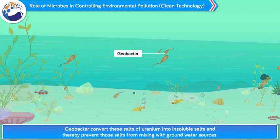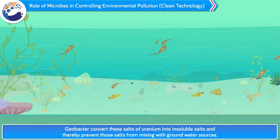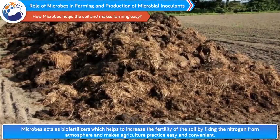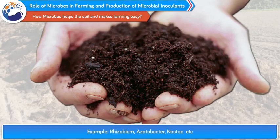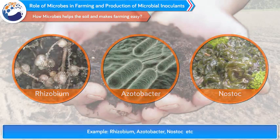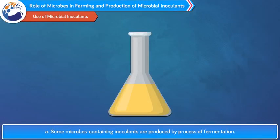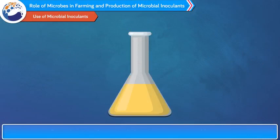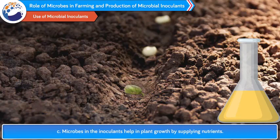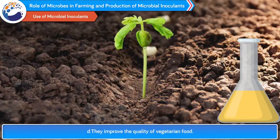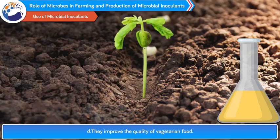As biofertilizers, microbes help to increase the fertility of the soil by fixing nitrogen from the atmosphere, making agriculture practice easy and convenient. Examples: Rhizobium, Acetobacter, Nostoc, etc. Use of microbial inoculants: A. Some microbes containing inoculants are produced by fermentation. B. These inoculants are sprayed on seeds before sowing and some are released into plants. C. Microbes in the inoculants help in plant growth by supplying nutrients. D. They improve the quality of vegetarian food. E. Solution containing Azotobacter and artificial nitrogenase is used in organic farming.